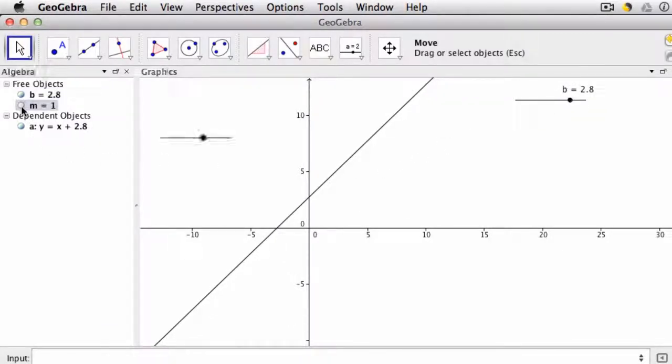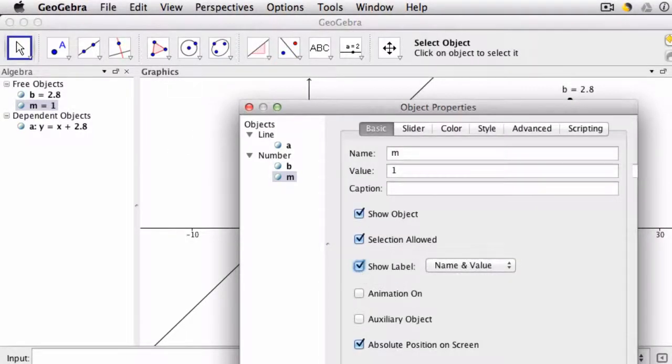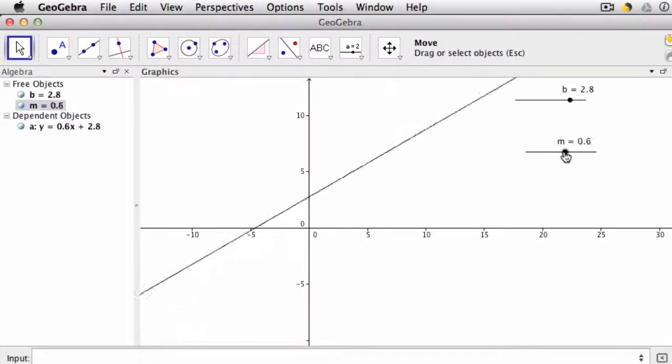We can do the same thing for the slope, and I would just drag it over here and again label that it's the slope. Now I can also change the slope.